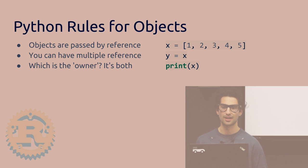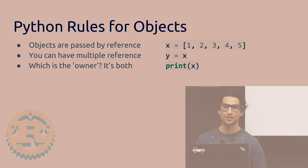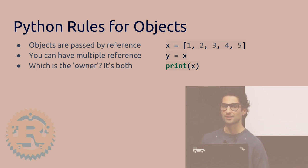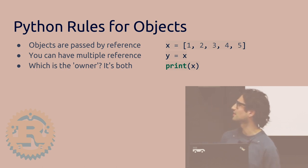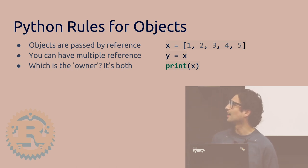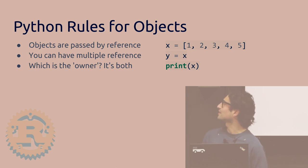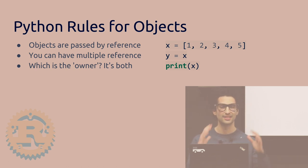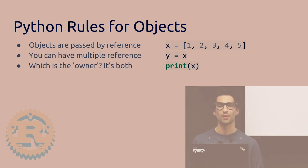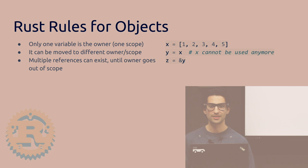Python rules for objects: objects are passed by reference. For example, if you have a list and assign it to Y, now X and Y both point to the same list. You can have multiple references to the same object. So which one is the owner — does it exist in X or Y? In Python, it's both. In Rust, you can only have one owner of a list.